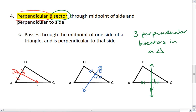Our red perpendicular bisector bisects side AB. Our blue perpendicular bisector bisects side BC. And our green perpendicular bisector bisects side AC.